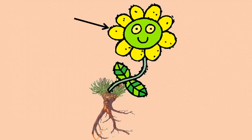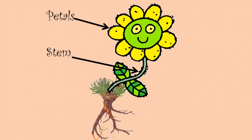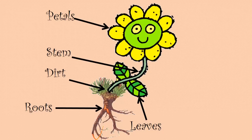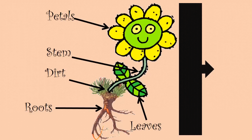These are the petals. That is the stem. Those are the roots. Those are the leaves. That is the dirt. The whole thing is called a plant.